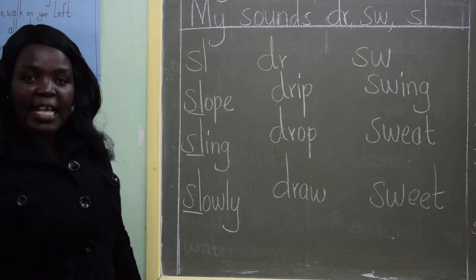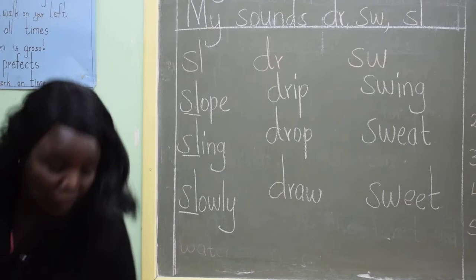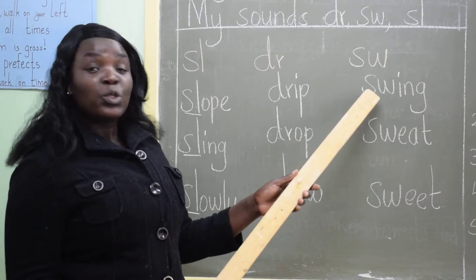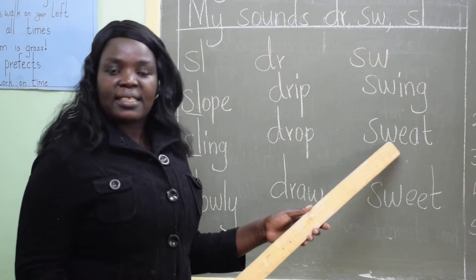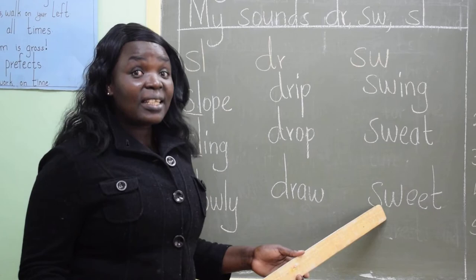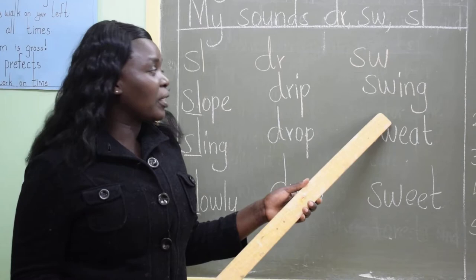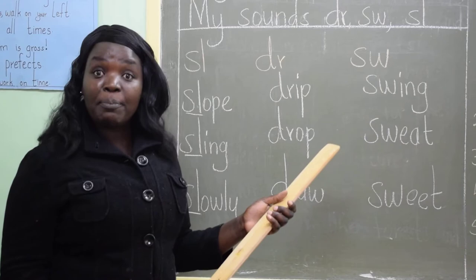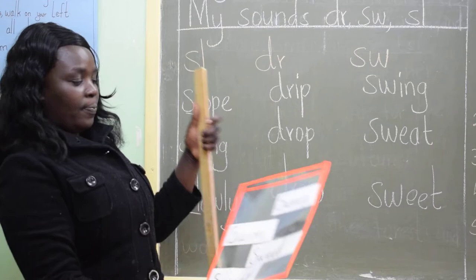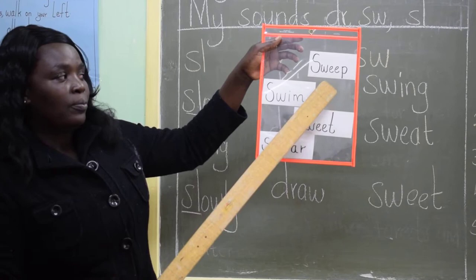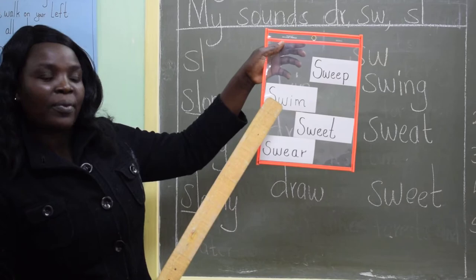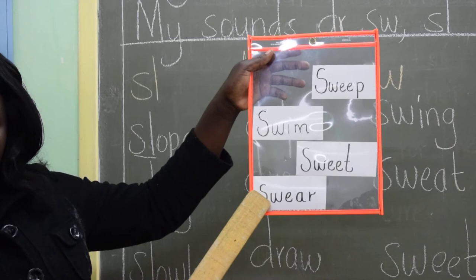Our last blend is SW. We can read these words together: swing, sweat, sweet. You can see the way I'm pronouncing. I have some of the words here also. There is the word sweep — you know sweeping? Sweep. We have swim. And we have sweet. We have swear. See how we can pronounce the words.